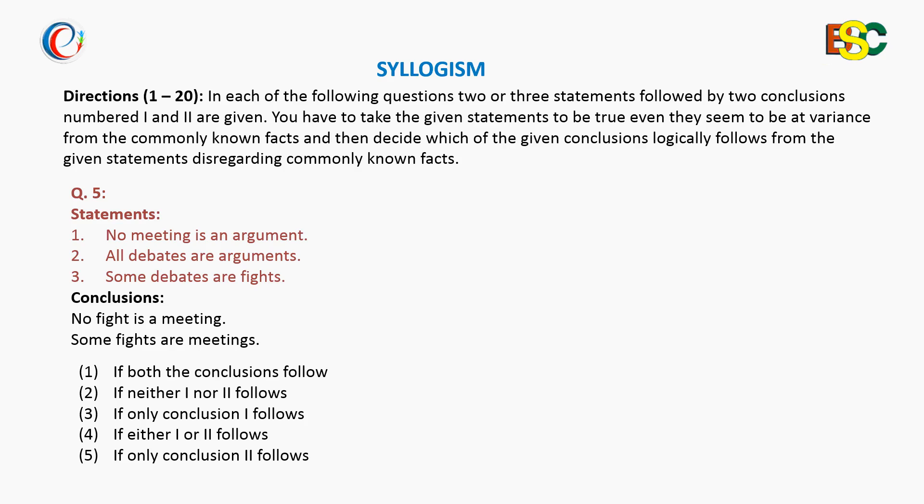Coming to the next question of the syllogism chapter, we have a set of three statements: one is negative, the other is positive, then the third one is also positive. We have to check the two conclusions, one is negative and one is positive.